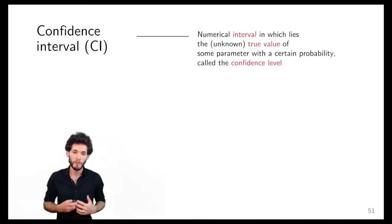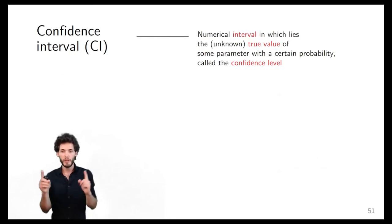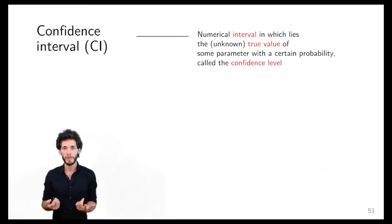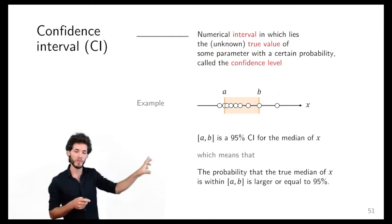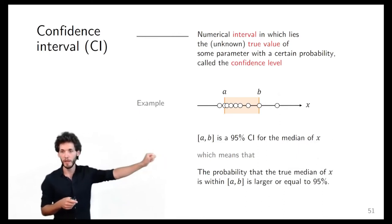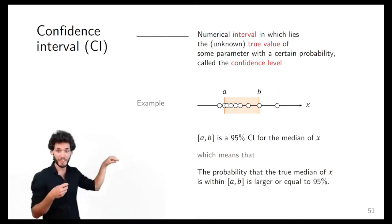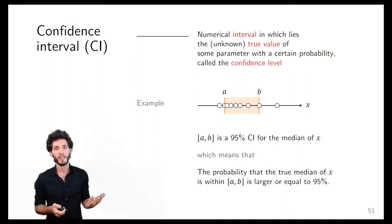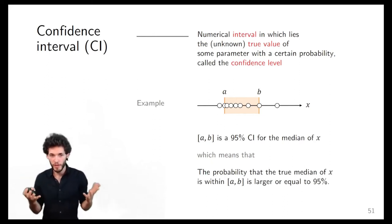A confidence interval is conceptually quite simple: it's a numerical interval in which the true value of some parameter lies with a given probability — called the confidence level. For example, if I say that [a, b] is a 95% confidence interval (CI) for the median of X, it means that the probability that the true median of the distribution of X lies within a and b is at least 95%. It's a long sentence, but the concept is fairly straightforward.